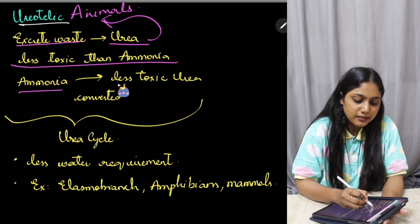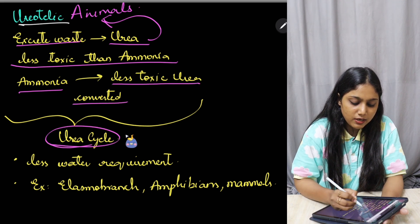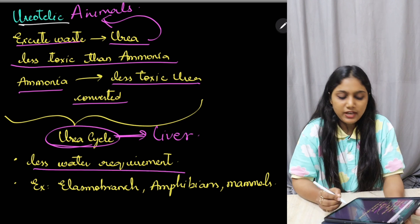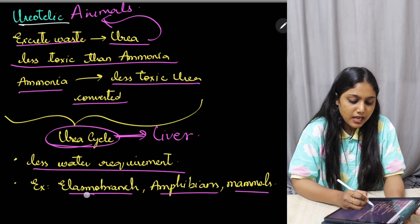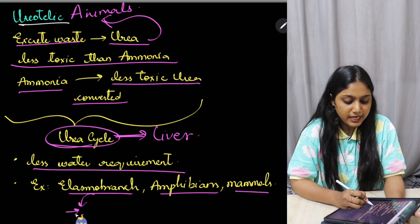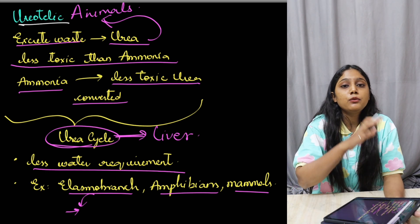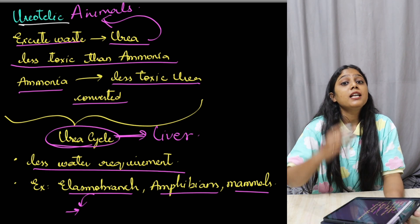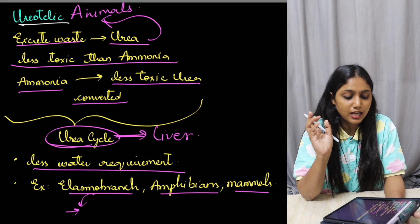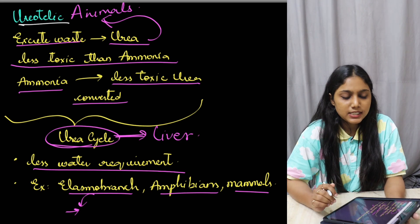Such animals are called ureotelic animals. Urea is less toxic than ammonia, and its formation through the urea cycle in the liver requires less water for excretion. Examples include elasmobranchs, amphibians, and mammals. Elasmobranchs are marine fishes living in a hypertonic environment, so they need to conserve water — this is why they excrete urea rather than ammonia.